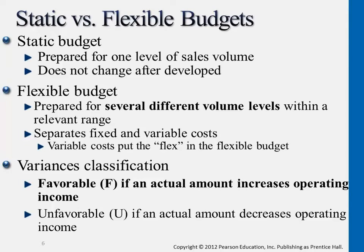If master budget expects variable expenses to be $8 per unit of sales, flexible budget also expects $8 per unit — we're just applying it to different volumes of sales. Flexible budget is just expanding the master budget a little bit. Nowadays, technology like Excel spreadsheets and budget management tools makes it very easy to play around with the level of sales and get different outputs of operating income.